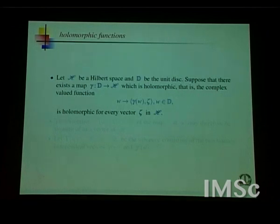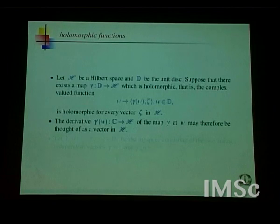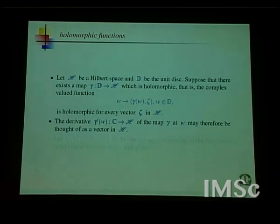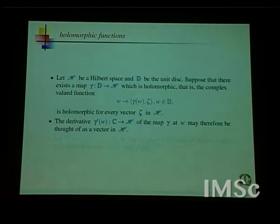This is just a holomorphic Hilbert space valued function. The map γ(ω), inner product with ζ, is actually holomorphic as a scalar-valued function for all vectors ζ in the Hilbert space H. For the kind of Hilbert spaces I am talking about, the derivative of such a Hilbert space valued holomorphic function often lies in the Hilbert space itself, thought of as a linear map.